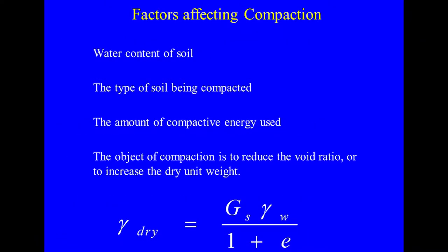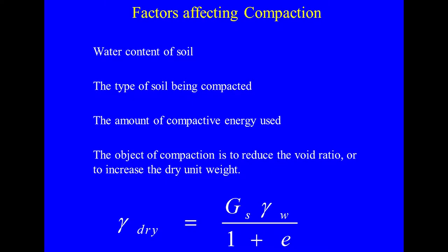Factors affecting compaction include: the water content of the soil; the type of soil being compacted, whether it is fine-grained, coarse-grained, mixed, or otherwise; and the amount of compactive energy used. Compactive energy means compacting with a hammer which falls from a certain height.